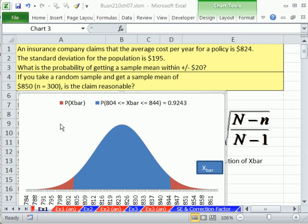Welcome to Excel 2010 statistics video number 69. If you want to download the Sword Court Business 210 Chapter 7, click on the link below the video. In this video, we get to compare a sample mean to the sampling distribution of sample means, or sampling distribution of x-bar. We're on the sheet EX1. We have three examples in this video.